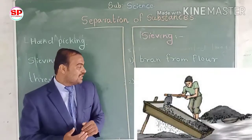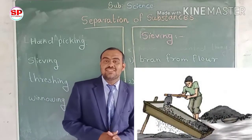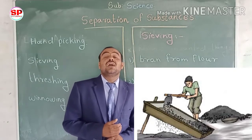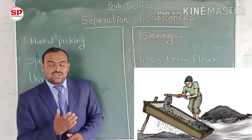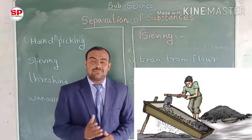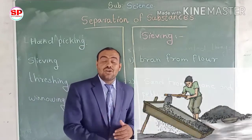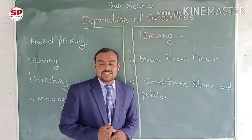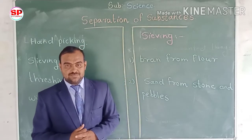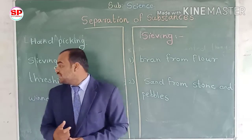Another example: sand is separated from stones and pebbles. This sieving method is used at construction sites for removing stones and pebbles from the sand, so that we can use the sand for building construction. So like that, this is the sieving method.